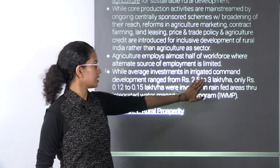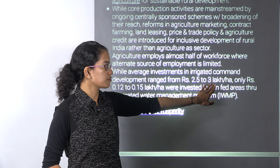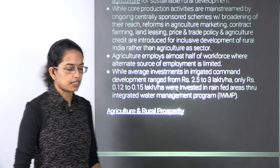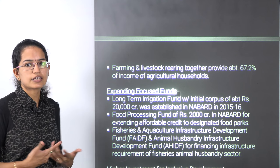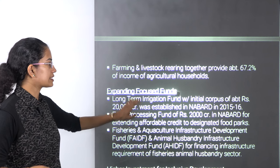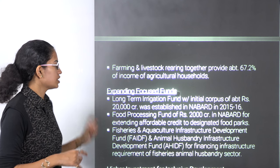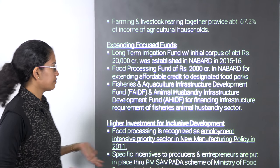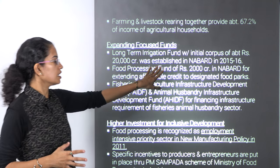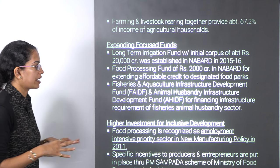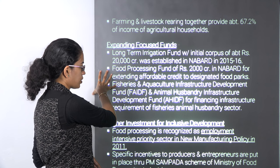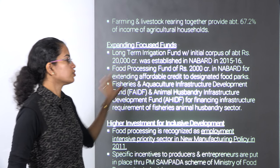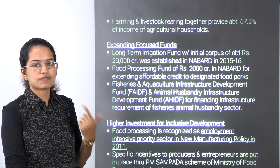The average investment in the irrigated command development area ranges from 2.5 to 3 lakh per hectare, but it's only Rs. 0.12 to 0.5 lakh per hectare which is invested in the rain-fed areas. For prosperity in rural areas, there are important funds — mainly long-term irrigation funds established by NABARD since 2015. We also talk about food processing funds, as food processing is an employment-intensive priority sector in the new manufacturing policy. There are also development funds for fisheries and animal husbandry, requiring financing infrastructure.